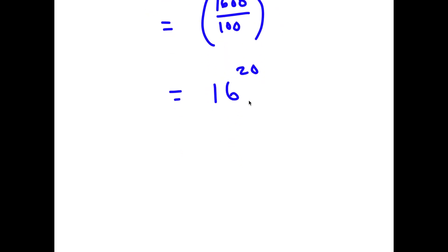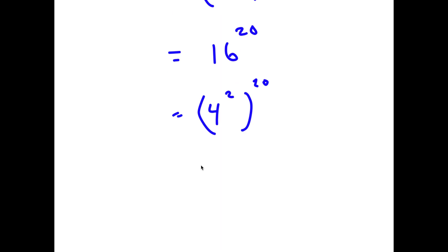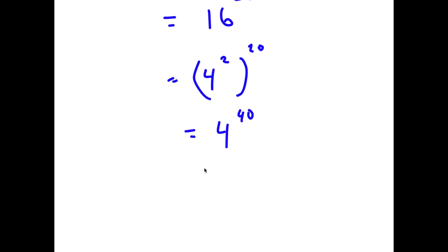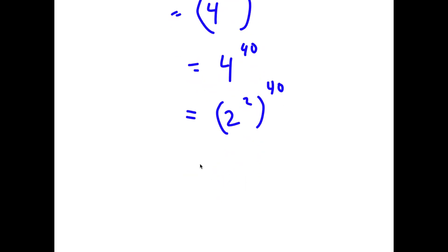Now 16 is the same thing as 4 to the power of 2, so I have 4 to the power of 2 to the power of 20, which equals 4 to the power of 40. And 4 is the same thing as 2 to the power of 2, so I have 2 to the power of 2 to the power of 40, which equals 2 to the power of 80.